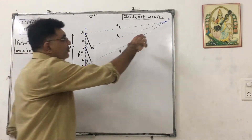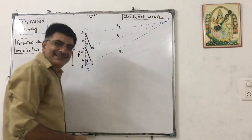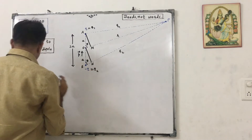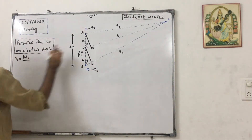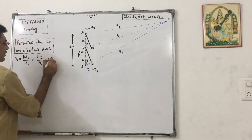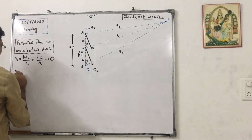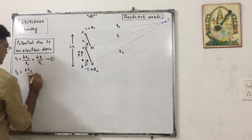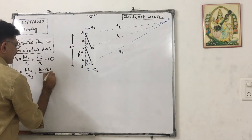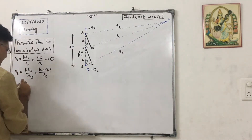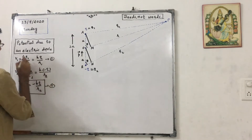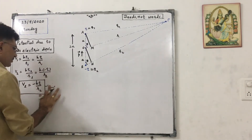Suppose we want to find out the electric potential at point P. Say this charge as q1 and this as q2. Then V1 will be equal to kq1 upon r1, that is kq by r1 — equation 1. q1 is q. Then V2 equals to kq2 by r2, so kq2 is minus q upon r2, which can be written as minus kq by r2 — equation 2.